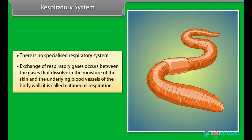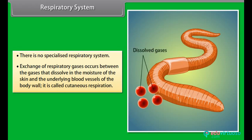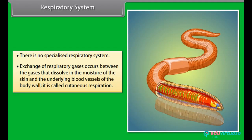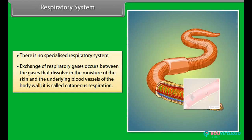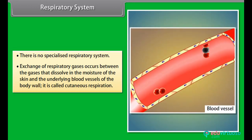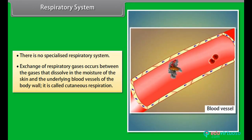There is no specialized respiratory system in earthworm. Exchange of respiratory gases occurs between the gases that dissolve in the moisture of the skin and the underlying blood vessels of the body wall. This is called cutaneous respiration.